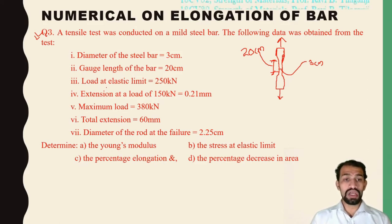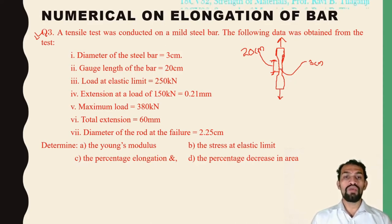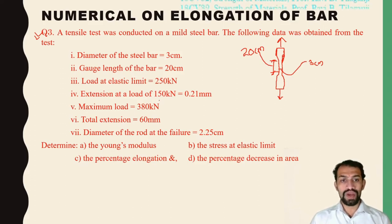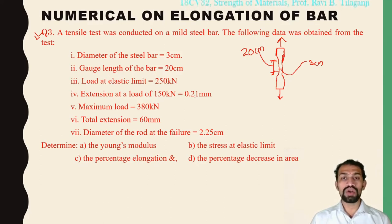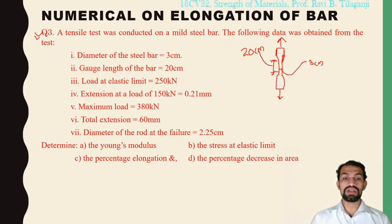The remaining data: the load at elastic limit and the extension at a load of 150 kilo-Newtons equals 0.21 mm. The maximum load taken was 380 kilo-Newtons, and the total extension was 60 mm.